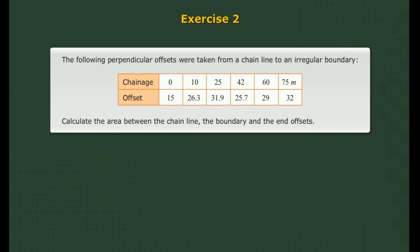Solved problem: The following perpendicular offsets were taken from a chain line to an irregular boundary. Calculate the area between the chain line, the boundary, and the end offsets.